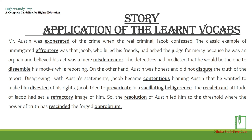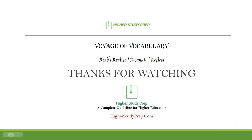Disagreeing with Austin's statement, Jacob became contentious, blaming Austin for wanting to make him divested of his rights. Jacob tried to prevaricate in a vacillating belligerence. The recalcitrant attitude of Jacob had set a refractory image of him. So the resolution of Austin led him to the threshold where the power of truth rescinded the forged opprobrium.